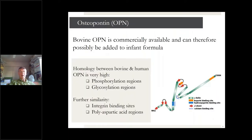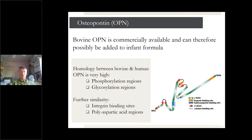Nowadays, bovine osteopontin is commercially available and can possibly be added to infant formula. But as scientists, we have a few prerequisites to fulfill before doing that. The homology — that is, the identity between bovine and human osteopontin — should be high, which it is. They are not identical, but in phosphorylation and glycosylation regions they are very similar. Even more importantly, the binding sites on the osteopontin molecule that bind to cell receptors are identical in bovine and human osteopontin. So we believe cow's milk osteopontin could have biological functions similar to those of osteopontin in breast milk.